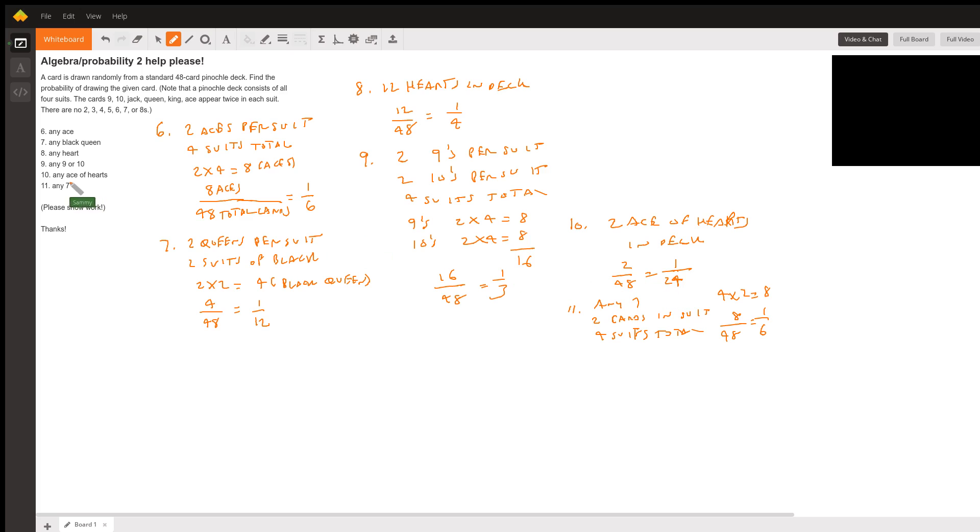And then number 11 is any seven. Any seven cards, right? Well, you have two cards in suit and four suits total, so it's just going to be 2 times 4 which is 8, divided by the total 48. It's one-sixth, so one-sixth will be the probability for number 11. All right, thanks, bye-bye.